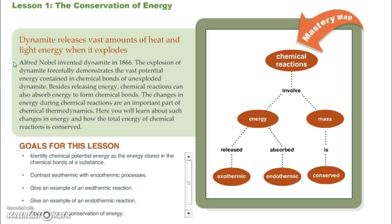Dynamite releases vast amounts of heat and light energy when it explodes. Alfred Nobel invented dynamite in 1866. The explosion of dynamite forcefully demonstrates the vast potential energy contained in chemical bonds of unexploded dynamite. Besides releasing energy, chemical reactions can also absorb energy to form chemical bonds. So instead of breaking the bonds and releasing energy, they can form bonds and absorb energy.